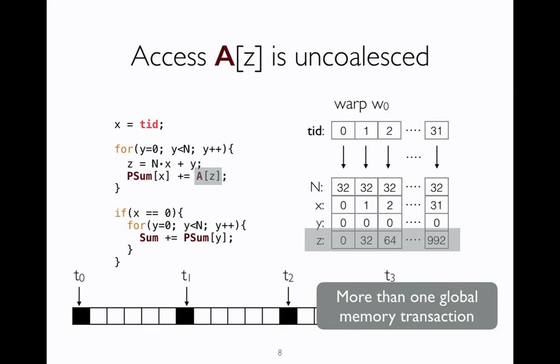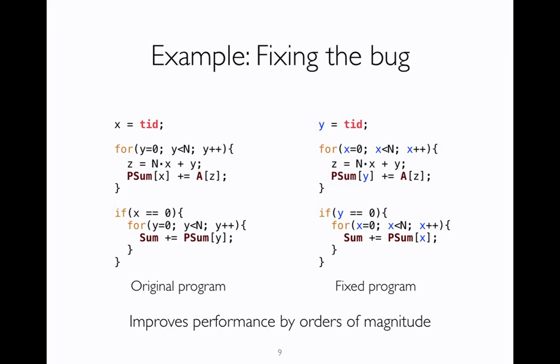Further, it is possible to fix this issue. If you look at the original program carefully, it is computing the sum of all the elements in array A, which is actually a flattened matrix. The way it does it is that first each thread computes partial sum along the row, and then the partial sums are added together to get the final sum. Instead of computing the partial sums along row, if the threads compute the partial sums along the column, the problem goes away and the same result is computed. So it is possible to fix these bugs and they are very important for performance.